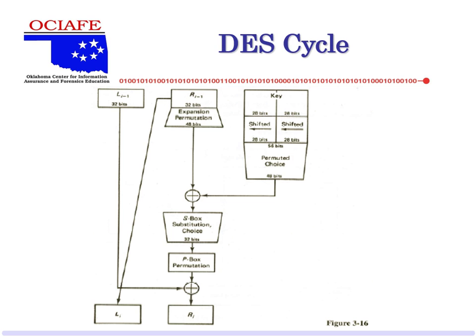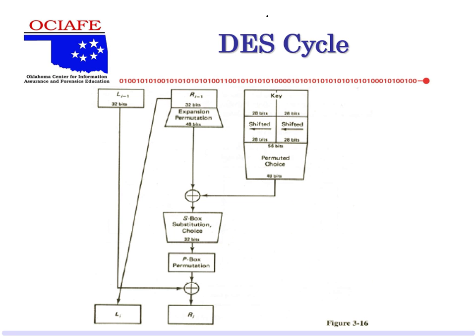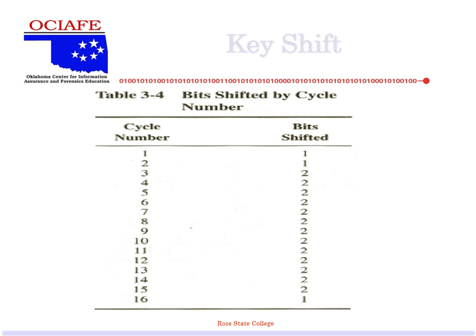The shift. On cycle number one we shift by one, cycle two we shift by one, cycle three we shift by two, cycles four through 15 shift by two, then on cycle 16 we shift by one. So the key is actually shifting as it goes through each round. Why did they do that? We don't know — it was secret for years.